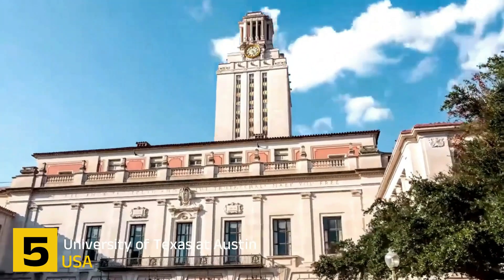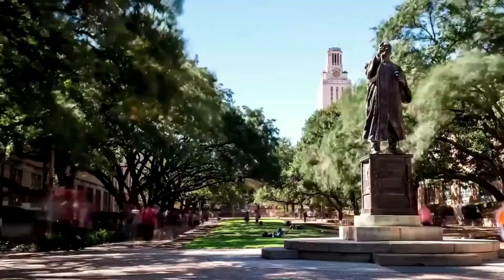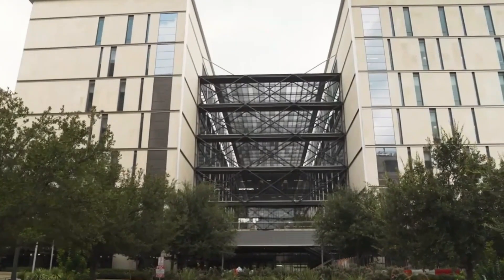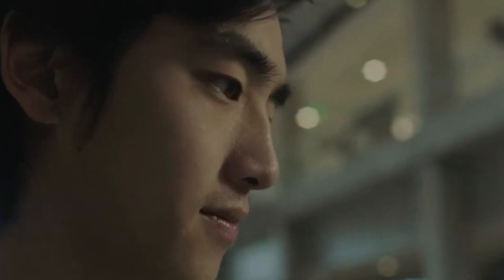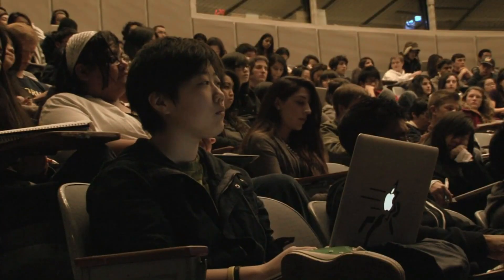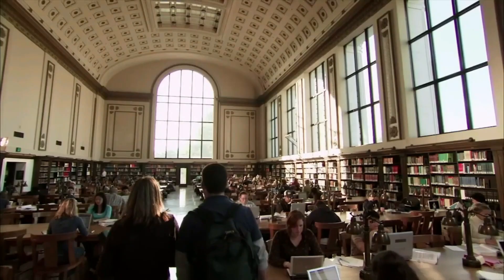Number 5. University of Texas at Austin. The University of Texas at Austin, situated in Austin, Texas, is a globally recognized institution currently ranked 15th in the world. The Cockerell School of Engineering at UT Austin, home to the Department of Civil, Architectural, and Environmental Engineering, is particularly renowned for its civil and structural engineering programs.